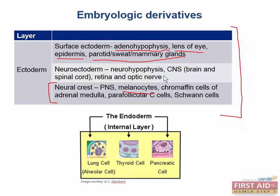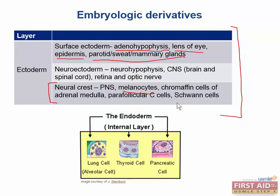Neural crest also gives rise to ependymal cells. And for neural crest, remember melanocytes, odontoblasts, bones of the skull, and the aorticopulmonary septum. These are all things you need to know for Step 1.